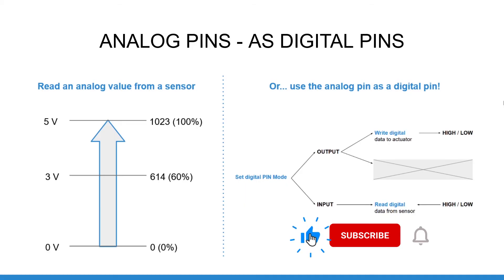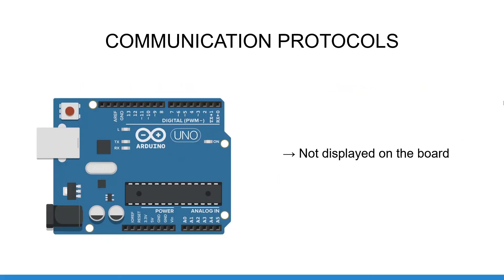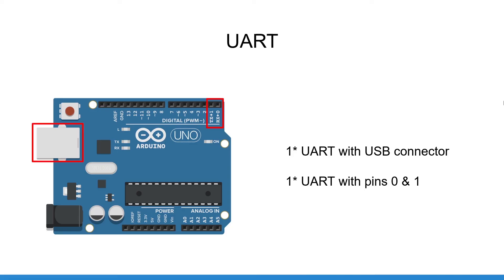There are three main communication protocols you can use with an Arduino Uno board through its pins: UART, SPI, and I2C. These protocols allow you to transfer more complex information faster — between your computer and your Arduino, between two Arduino boards, or between an Arduino and an external component such as a sensor. Let's start with UART. UART is one of the most used protocols with Arduino — when you connect your Arduino Uno to your computer and communicate via the serial library, you are actually using UART.